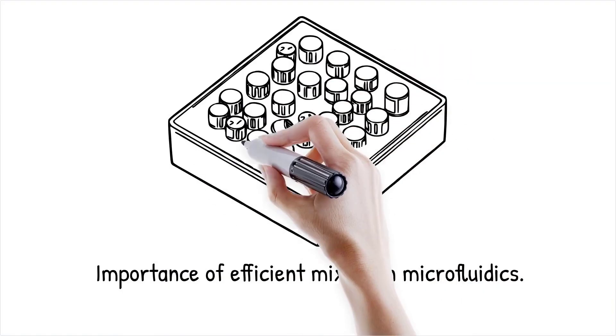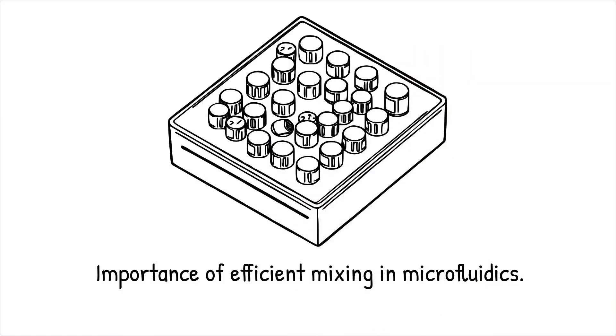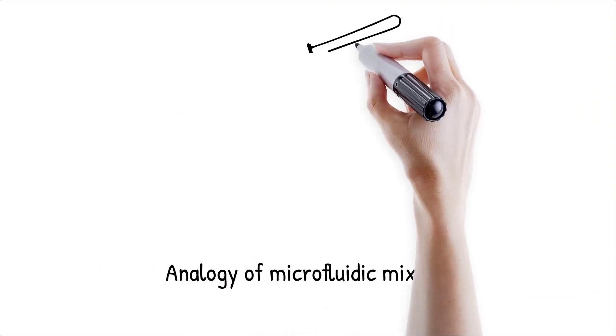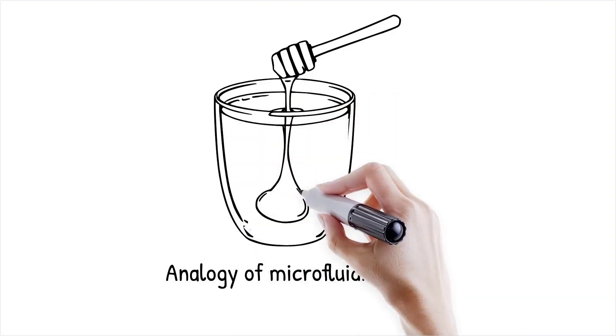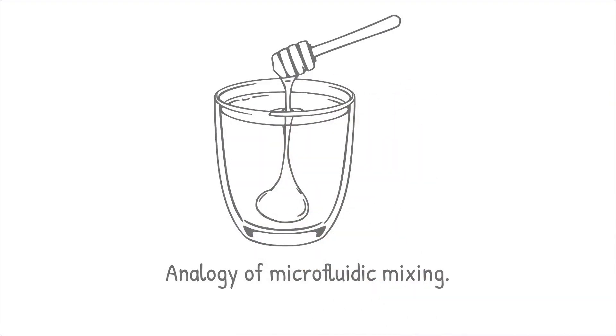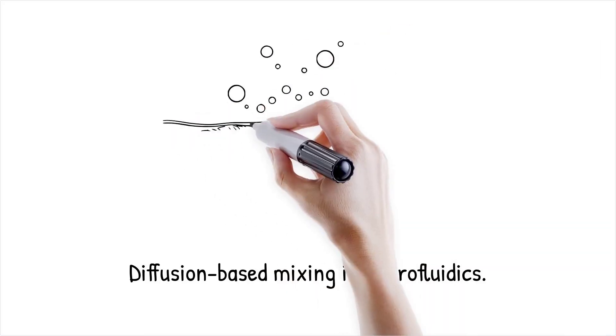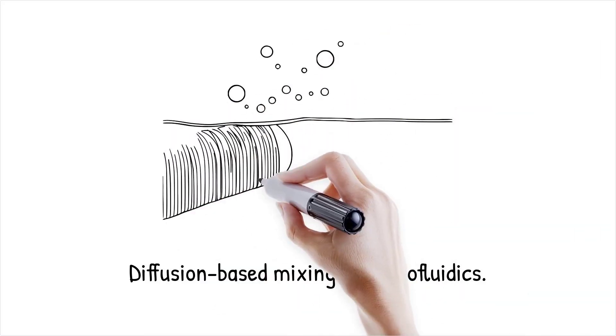Efficient mixing is crucial for chemical reactions, biological assays, and nanoparticle synthesis, where reaction efficiency and uniformity depend on rapid and controlled fluid interaction. In lab-on-a-chip devices, effective mixing ensures uniform reagent distribution in PCR polymerase chain reaction assays for DNA amplification.